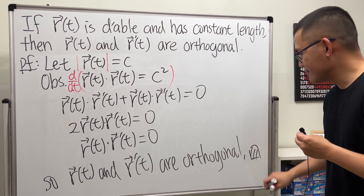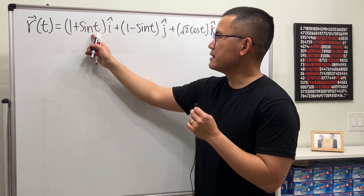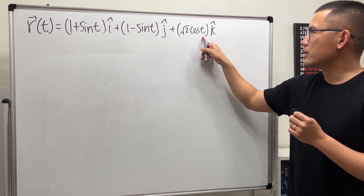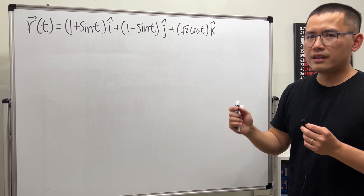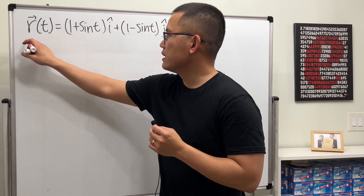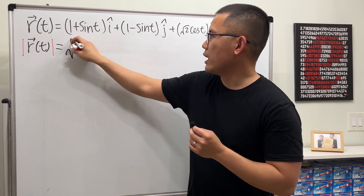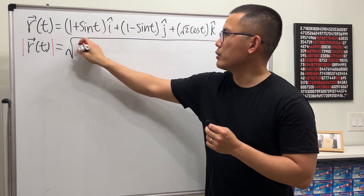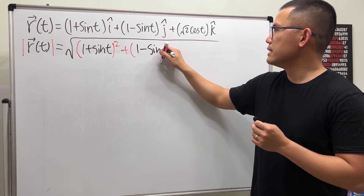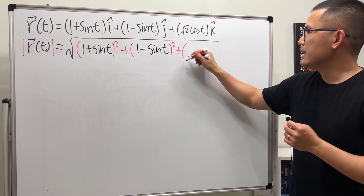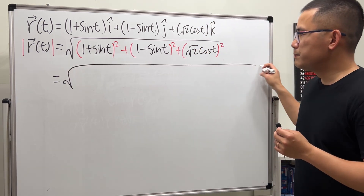Now let me show a quick example. We have the vector function r(t) = (1 + sin t)i + (1 - sin t)j + (√2·cos t)k. First, let's verify that this has constant length regardless of t. If we consider the magnitude, we take the square root of the sum of each component squared: (1 + sin t)² + (1 - sin t)² + (√2·cos t)².